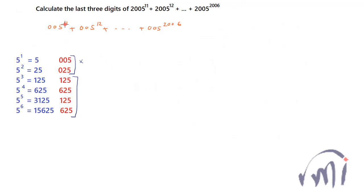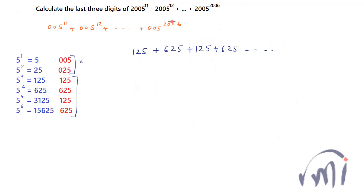So 005 to the power 11 will have 125 as the last three digits, and 005 to the power 12 will have 625 as last three digits. Again we will have 125 and 625, and this will continue till 005 to the power 2006, which is an even number. So the last three digits of that term will be 625.